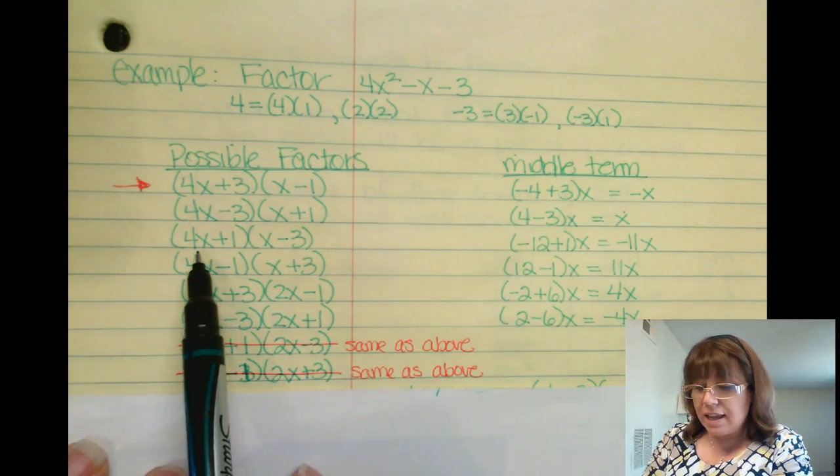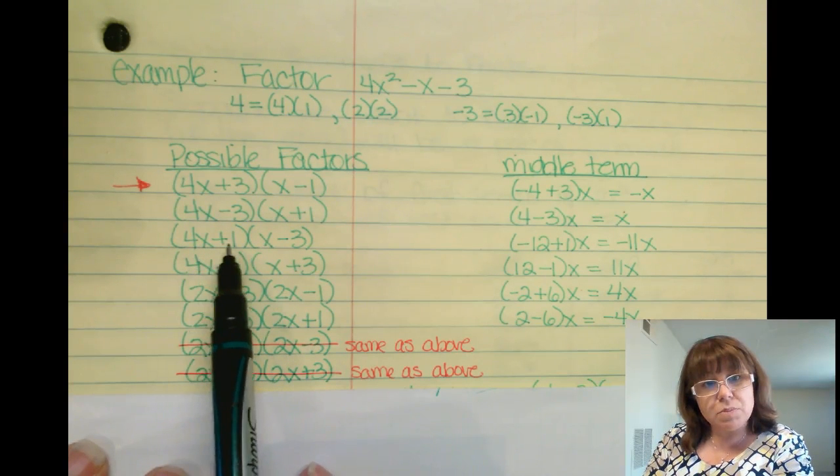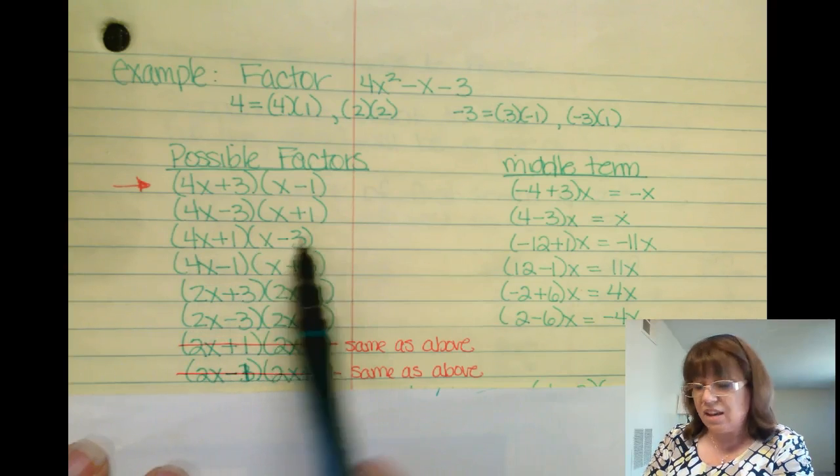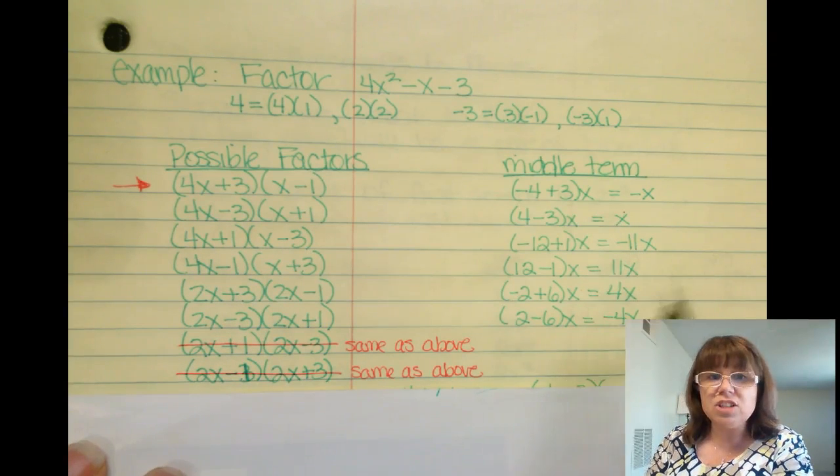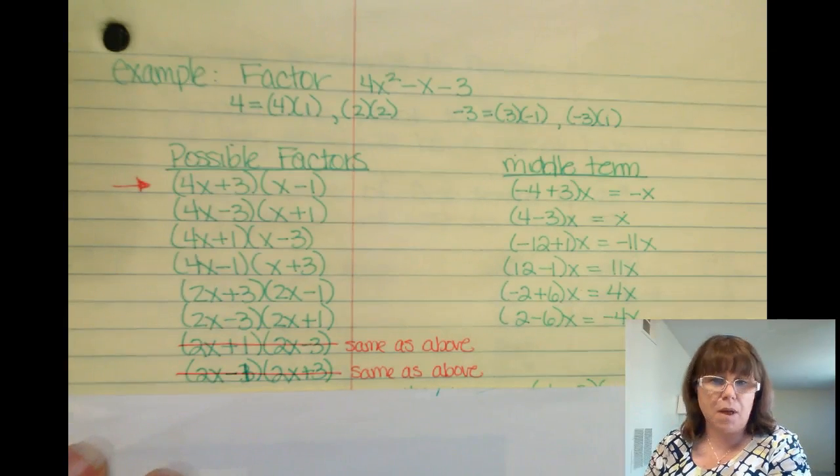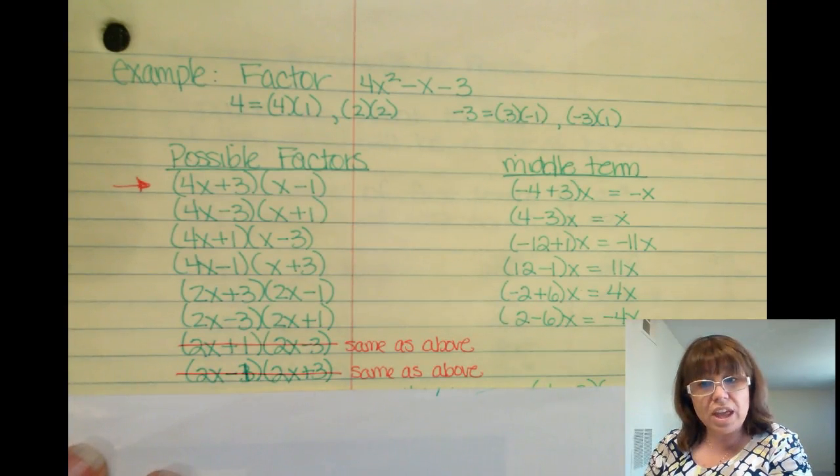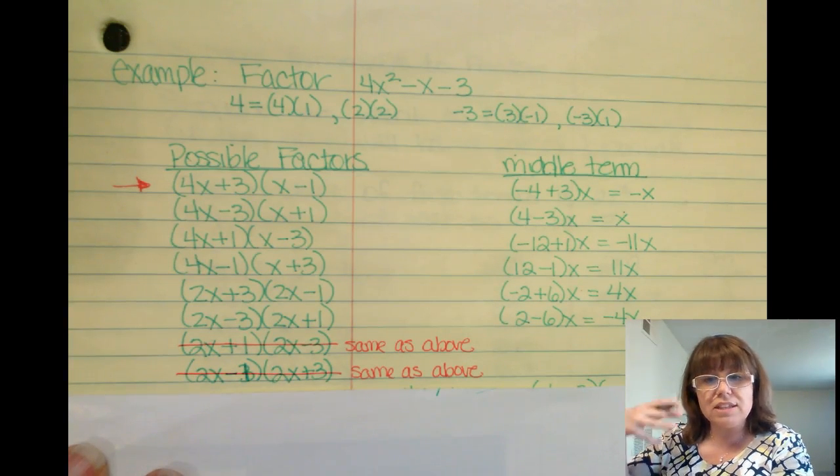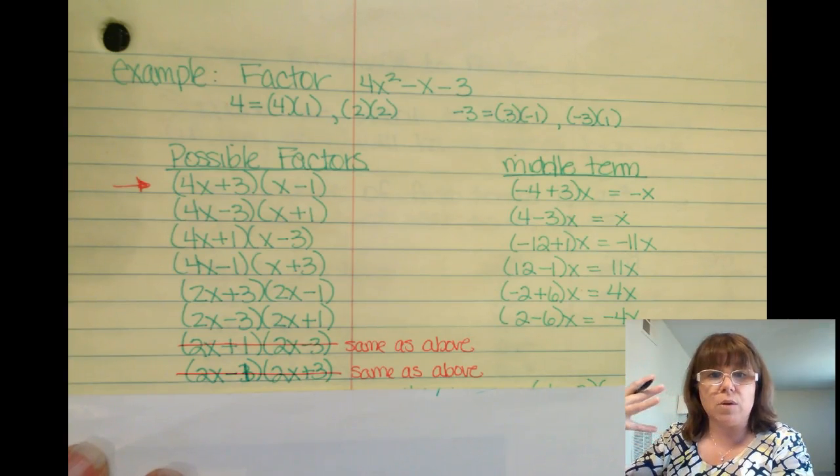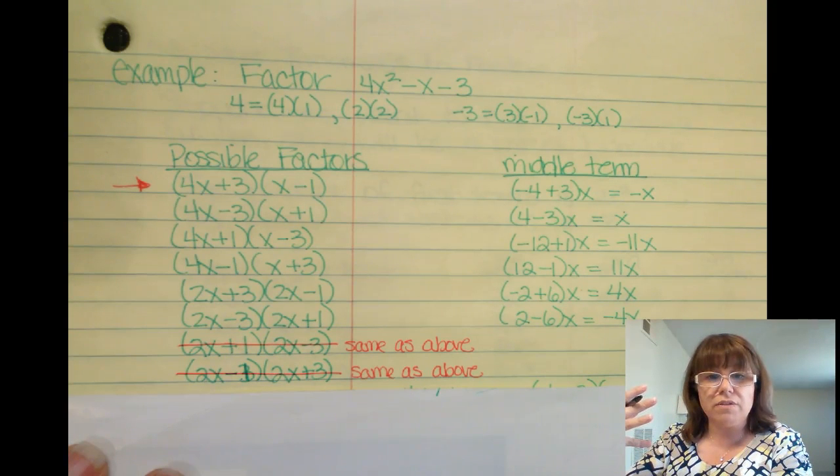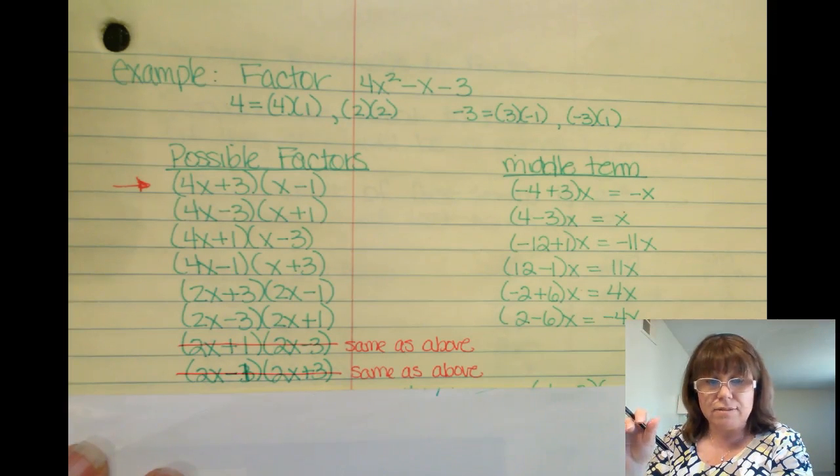You can also say, 4x plus 1, x minus 3 gave me a negative 11. If I just switch those signs, I'm going to get a positive 11, so I can rule the other one out. So these are things that you'll start to think about in terms of what can I rule out really quickly and what can I concentrate on.